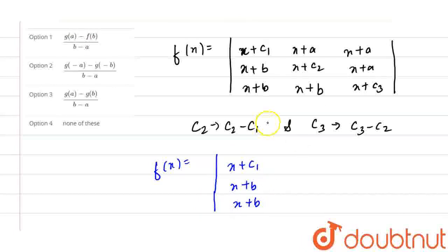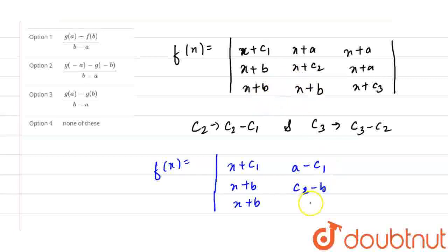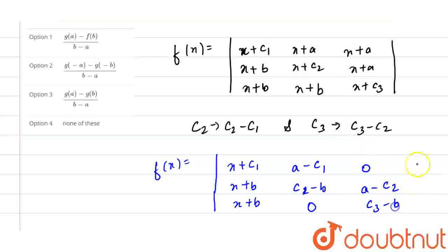For column 2 minus column 1: x+a minus x minus c1 gives a−c1. Similarly, x+c2 minus x+b gives c2−b. And x+b minus x+b gives 0. For column 3 minus column 2: x+a minus x+a gives 0; then a−c2; and c3−b.